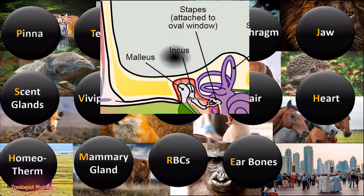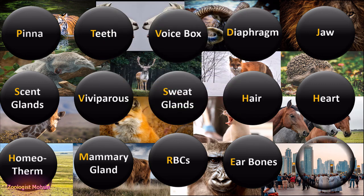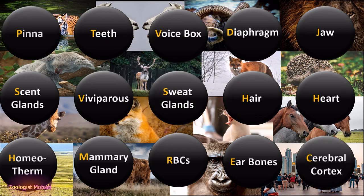The next feature is ear bones. Mammals have three bones in the ear: the malleus, incus, and stapes. The stapes is the smallest bone in the human body, and these three bones are a unique feature of mammals.